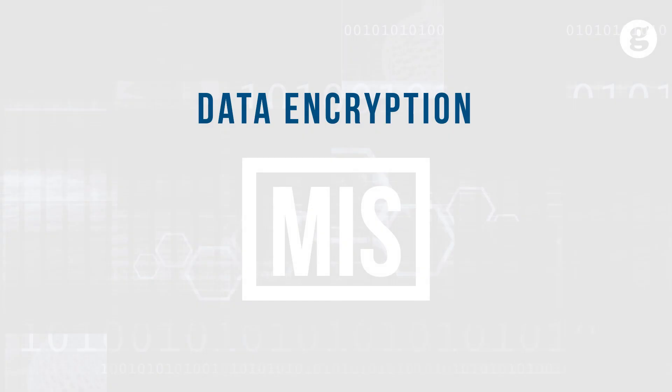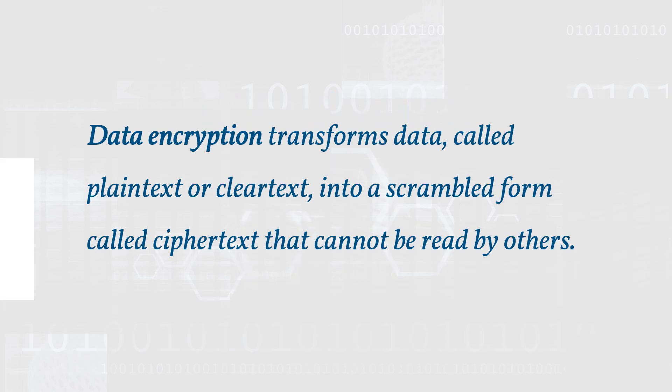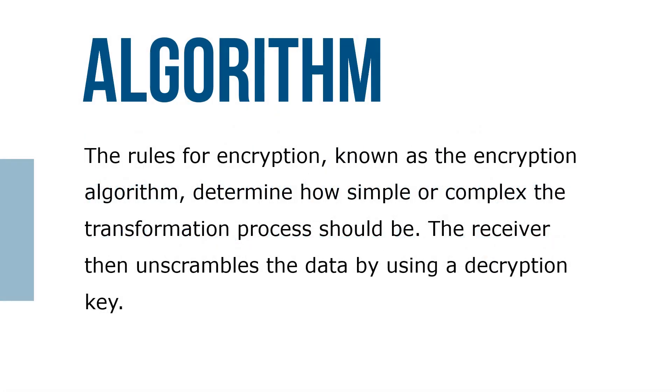Let's take a look at data encryption. Data encryption transforms data, called plain text or clear text, into a scrambled form called ciphered text that cannot be read by others. The rules for encryption, known as the encryption algorithm, determine how simple or complex the transformation process should be.